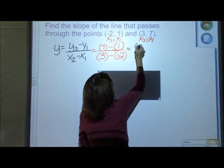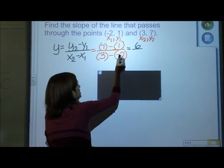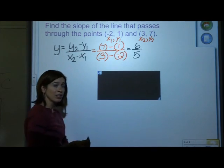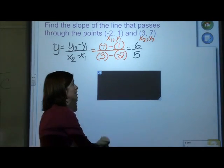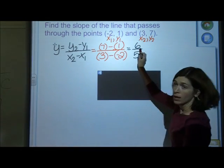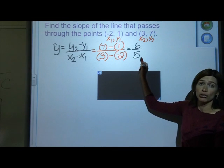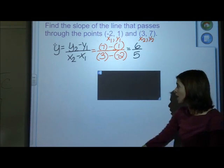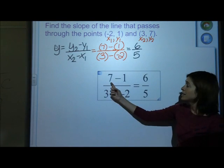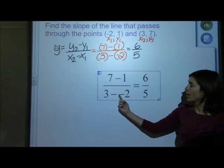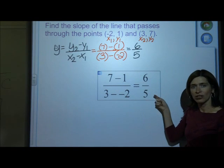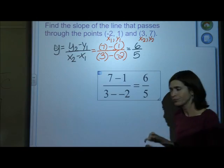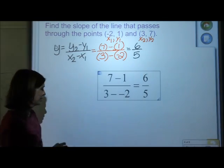So I'm not going to forget that I have a negative and a negative, and it becomes positive. So I have 7 minus 1. 7 minus 1, which is 6. I have 3 minus negative 2. So 3 plus 2, which is 5. So my slope is 6 over 5. That means that I am going up 6 and to the right 5. Up 6 and to the right 5. So let's check and see if we are right. 7 minus 1, 3 minus negative 2. So 6 over 5. My rise over my run. My rate of change.